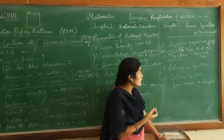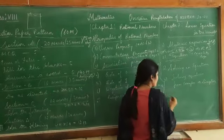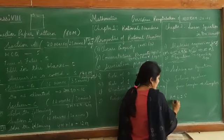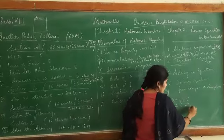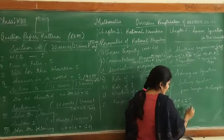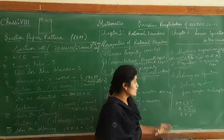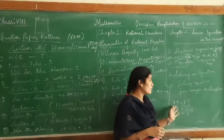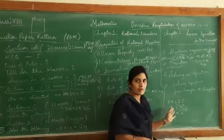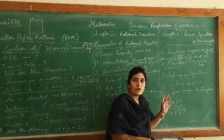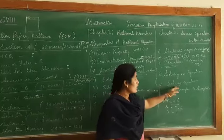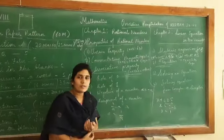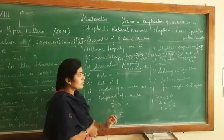Now solving an equation: whenever an equation is given you should try to solve it. For example, x plus 4 equals 5, so x equals 5 minus 4, so x equals 1. Solving an equation means finding out the unknown variable written in the form of an alphabet using the given constants.